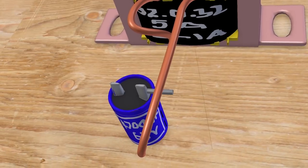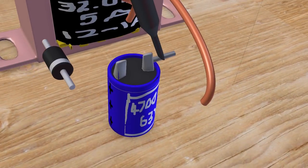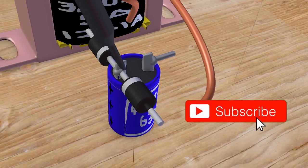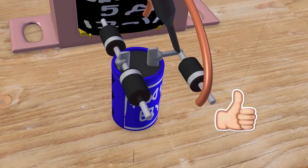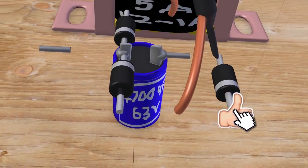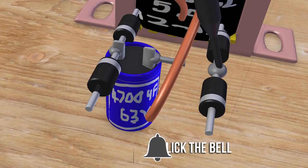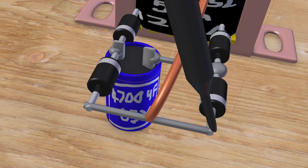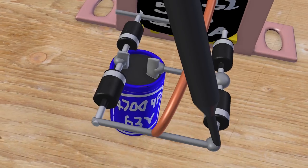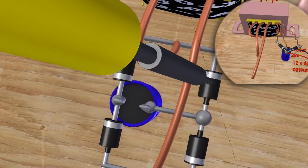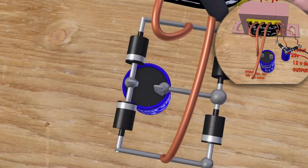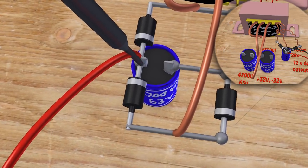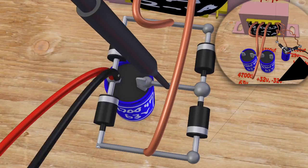If you have a single power supply, you can create a bridge. You can use the capacitor for the minus voltage. I will try to explain how you can see the capacitor in this video.